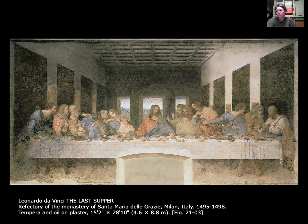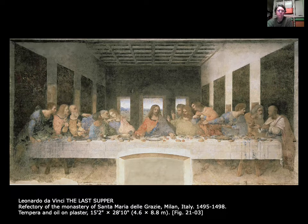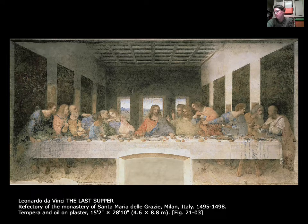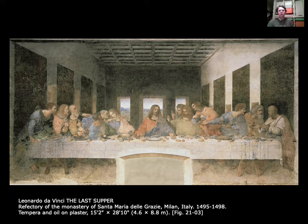This is da Vinci's most iconic work and probably one of the most famous works of art in history — the Last Supper. It was created for a refectory, a dining hall, in a monastery in Milan. It makes sense that it's a dining scene because it was in the place where monks would dine. What you're looking at is the exact moment after the Last Supper in which Jesus tells his disciples that one of them will betray him.